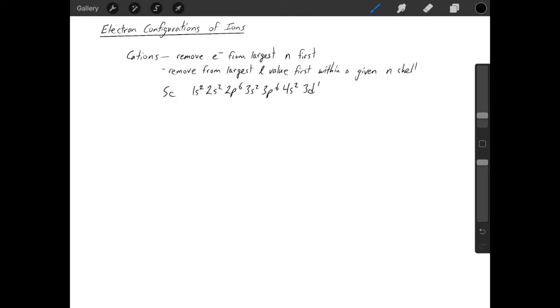So in this case, the largest n-value is n equals 4. Even though the n equals 3 shell has electrons to the right of it, so the 3d1 electron, you take from the highest n-value first. And that means the scandium 1-plus ion is going to have the following electron configuration.